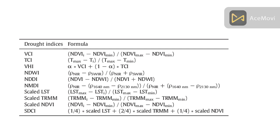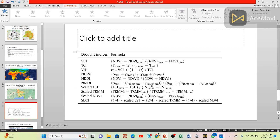TCI (Temperature Condition Index) uses the same approach. If you have a land surface temperature map, TCI equals maximum temperature minus any pixel's temperature value, divided by maximum minus minimum temperature. Then VSI is calculated using the formula where alpha is a variable — it is not a fixed constant. Now let's look at the code.